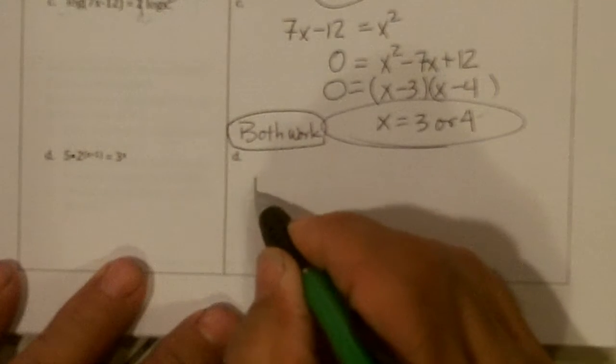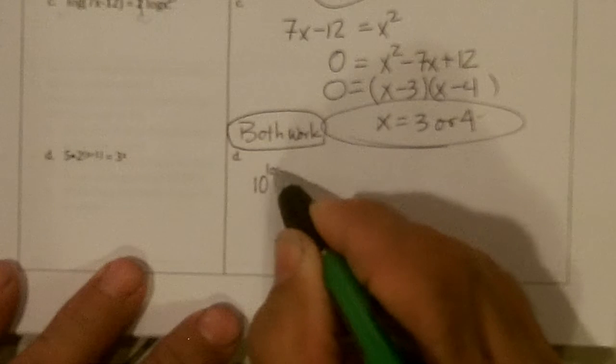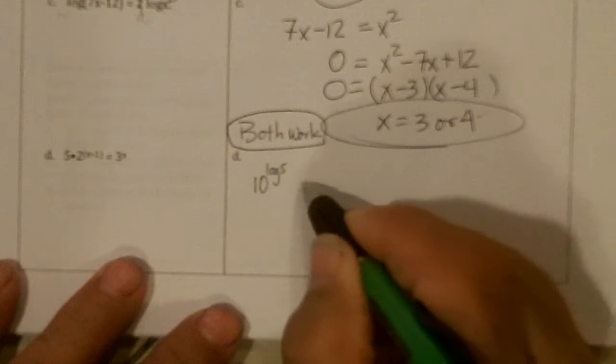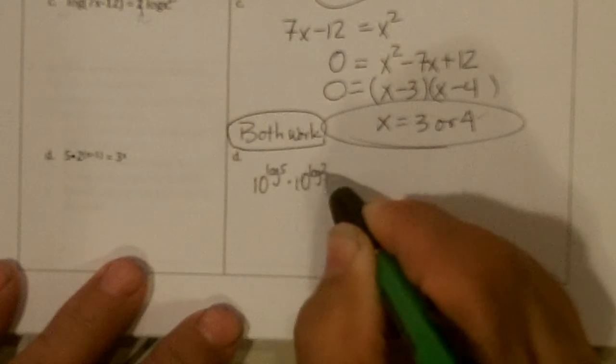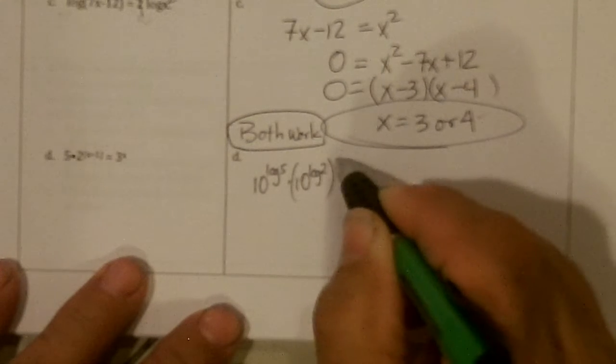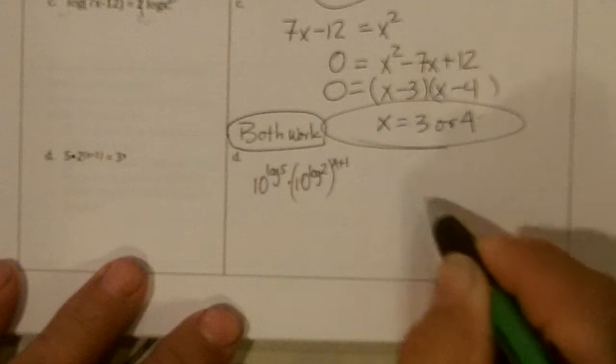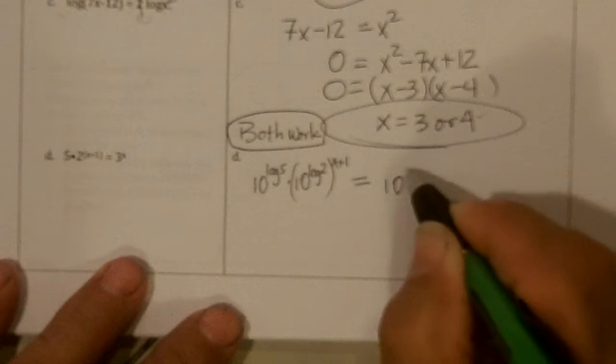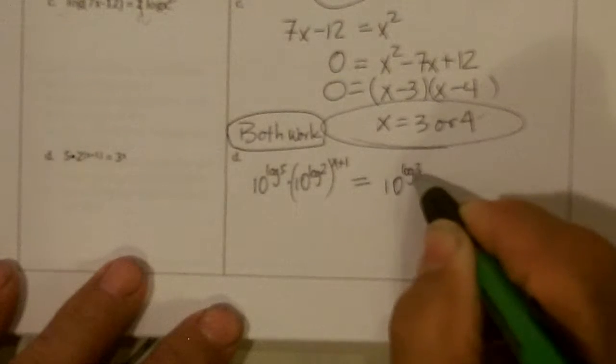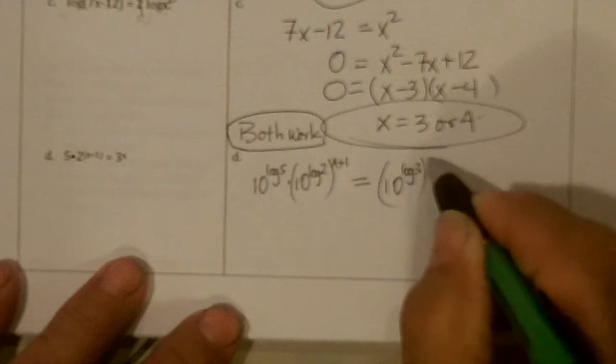So 5 is 10 to the log 5, 2 is 10 to the log 2, and that's to the x plus 1, and 3 is 10 to the log 3, and that's to the x.